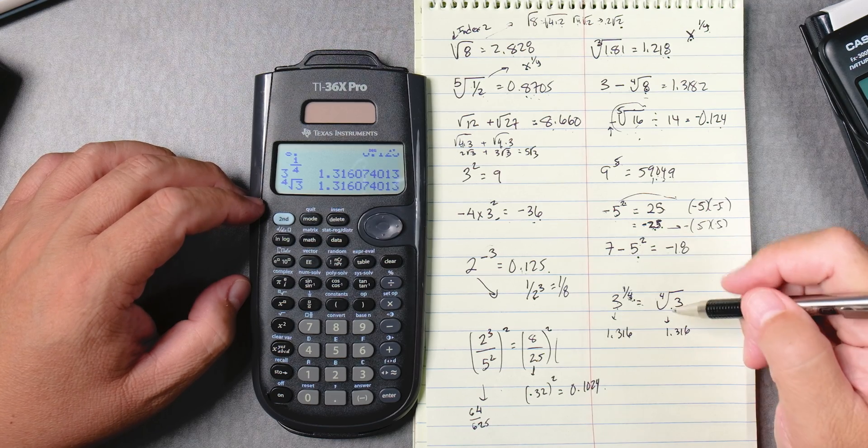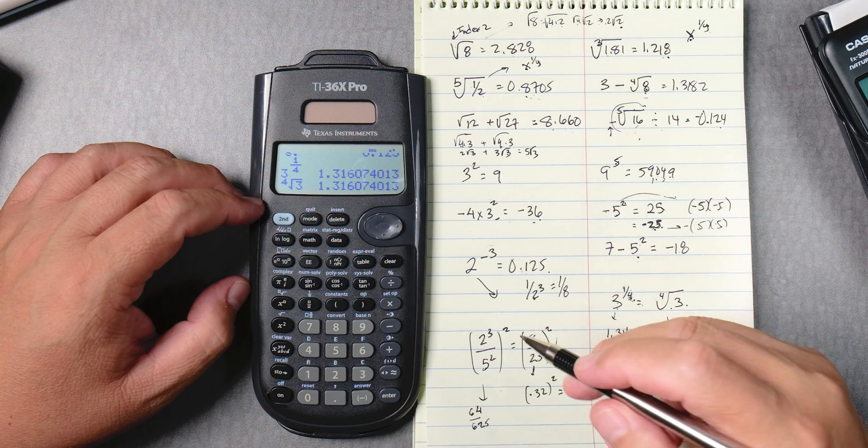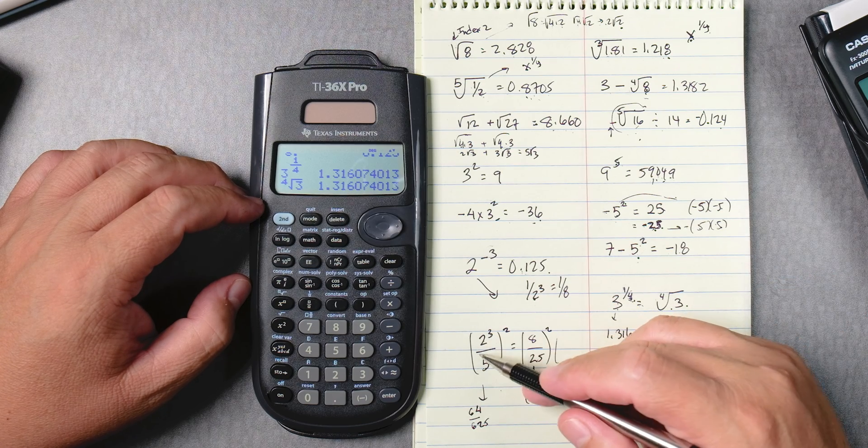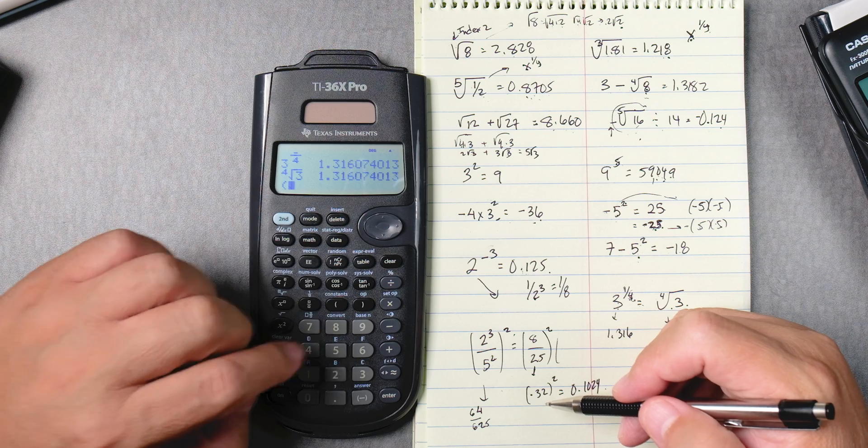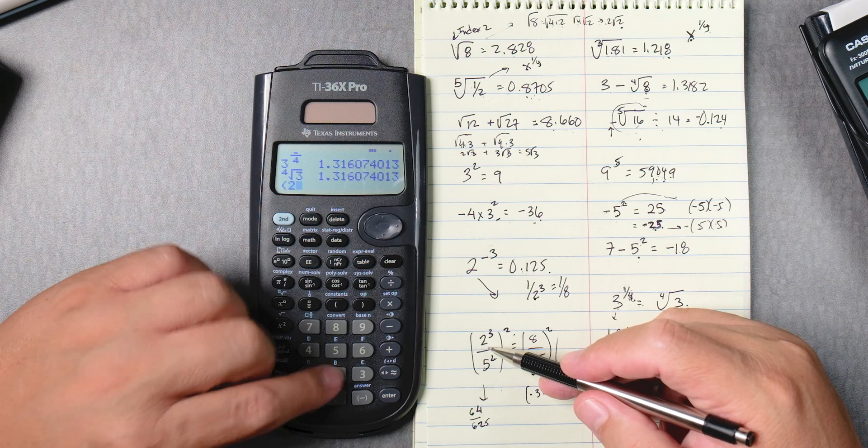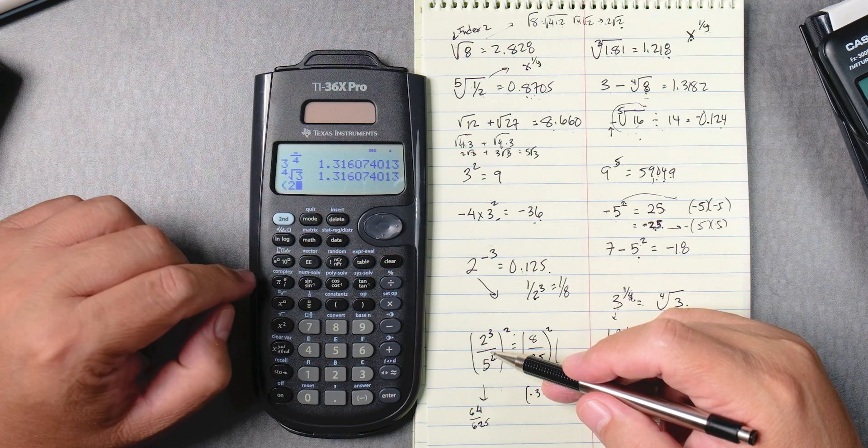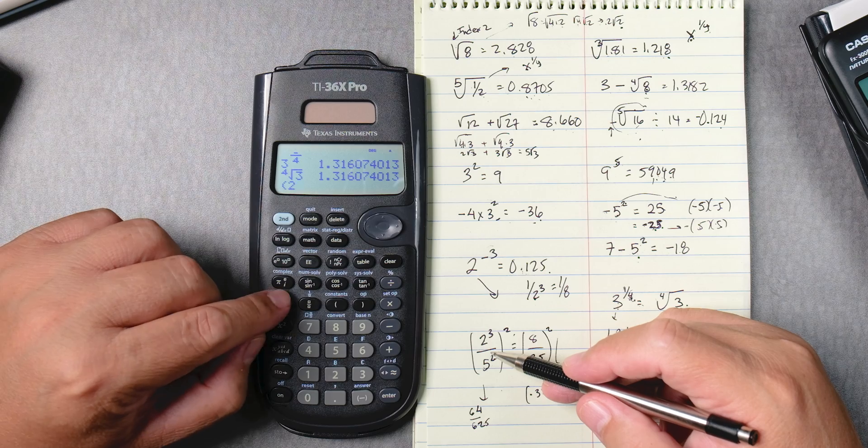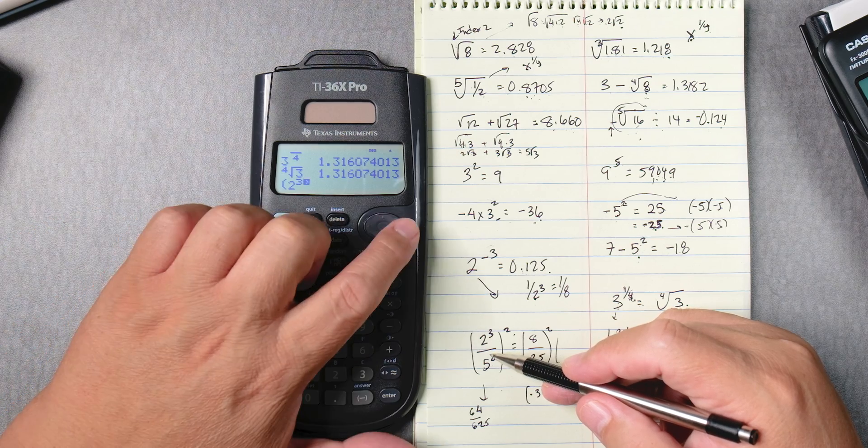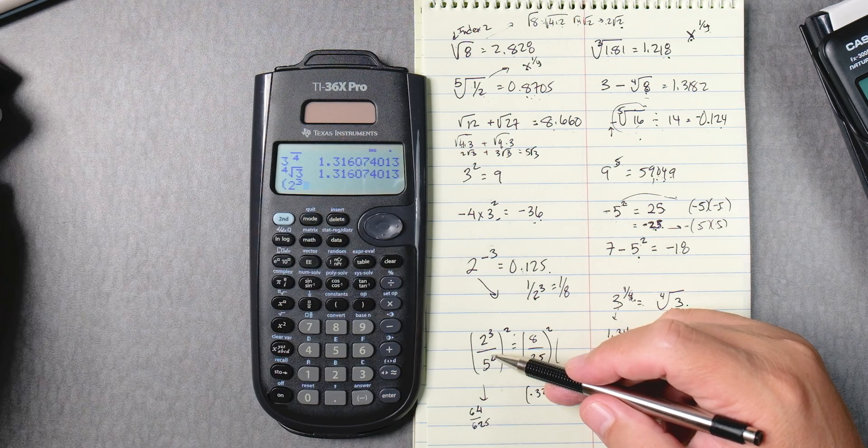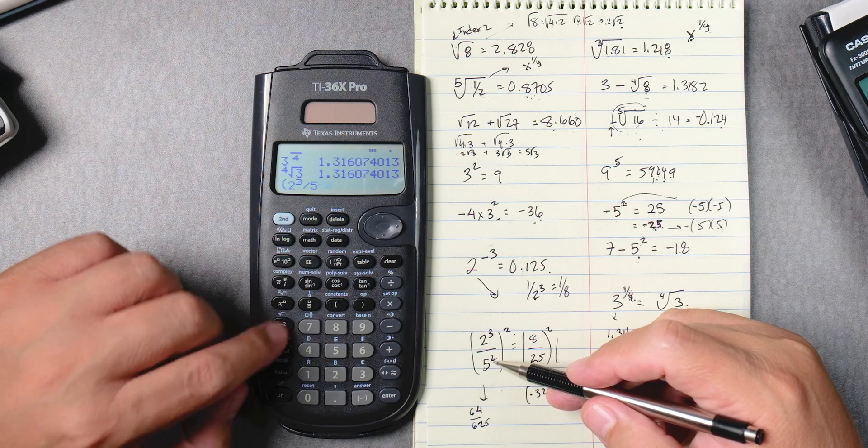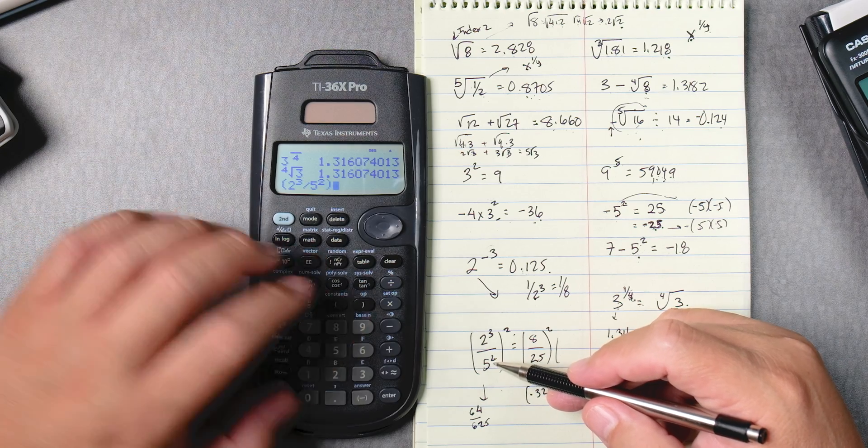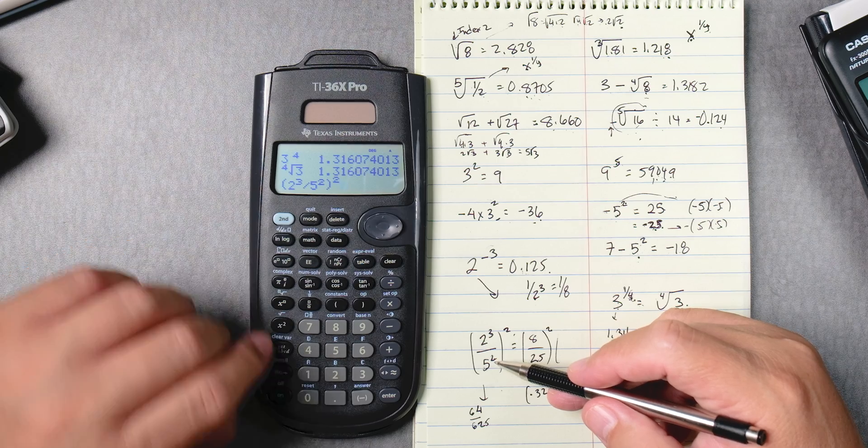Next one. 2 to the 3rd divided by 5 squared to the power of 2. So parentheses, 2 to the power, which will be here, to the 3rd. You got to move over, bring it down, divide, 5 squared, close it, and then square it. Enter.